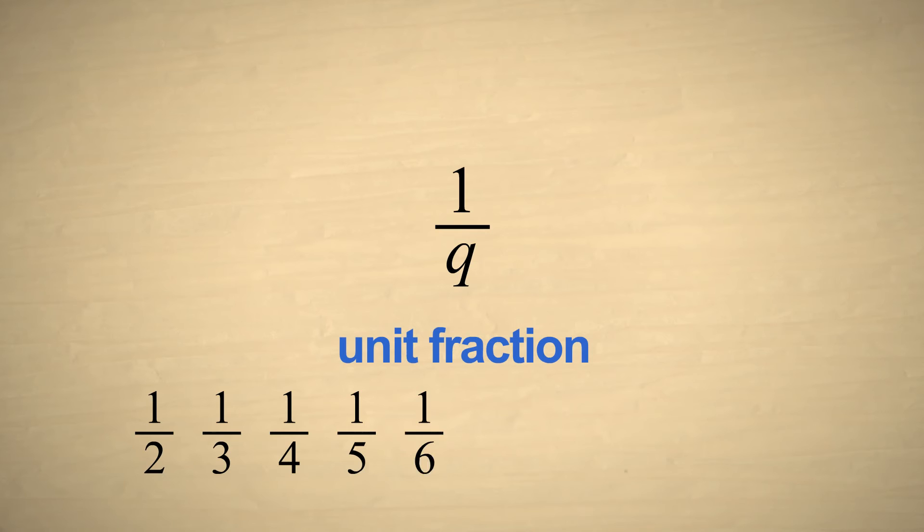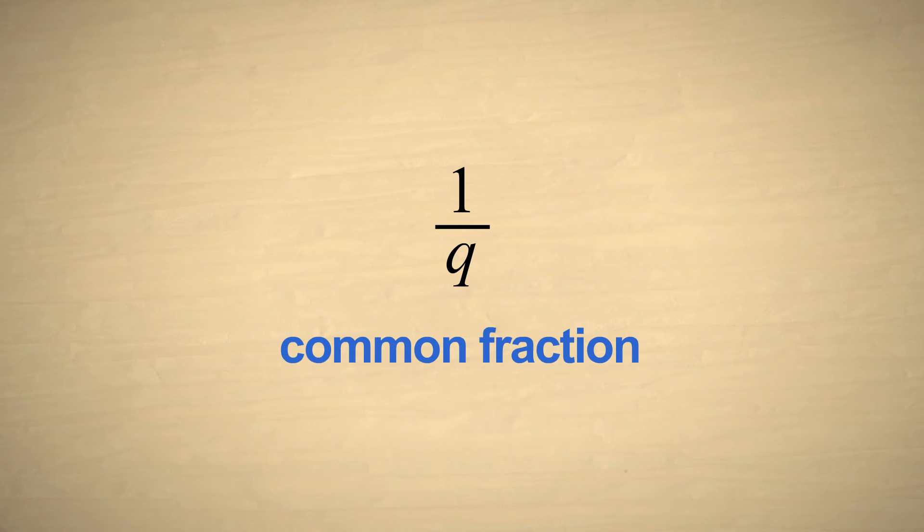Unit fractions were the only type of fractions used for thousands of years. Not until the Middle Ages did people start using what were called vulgar fractions. These fractions, which today are called common fractions or just fractions, are composed of two integers which we will represent by the letters P and Q.